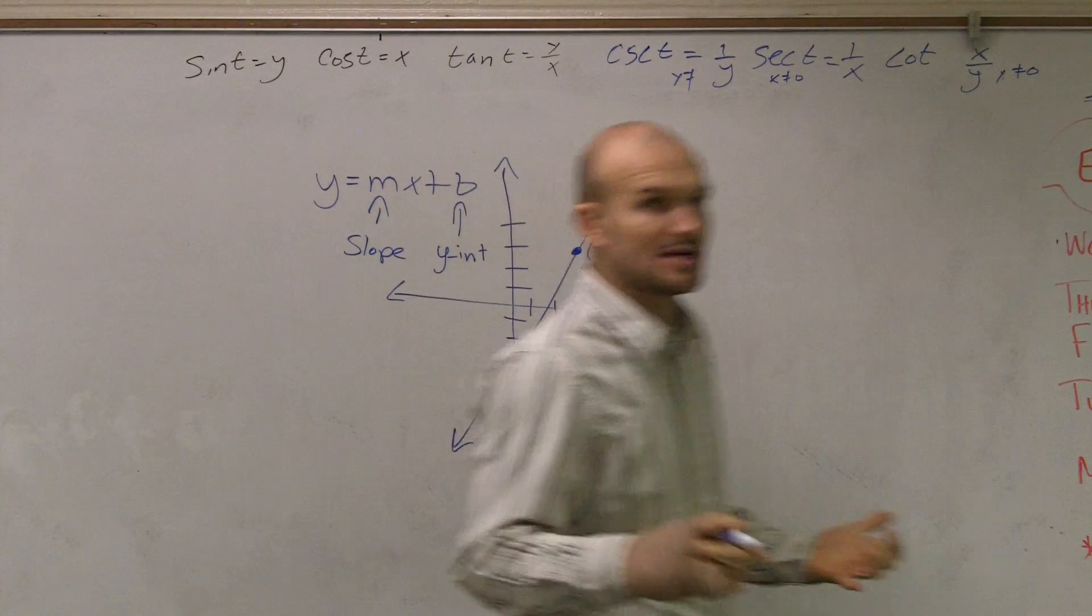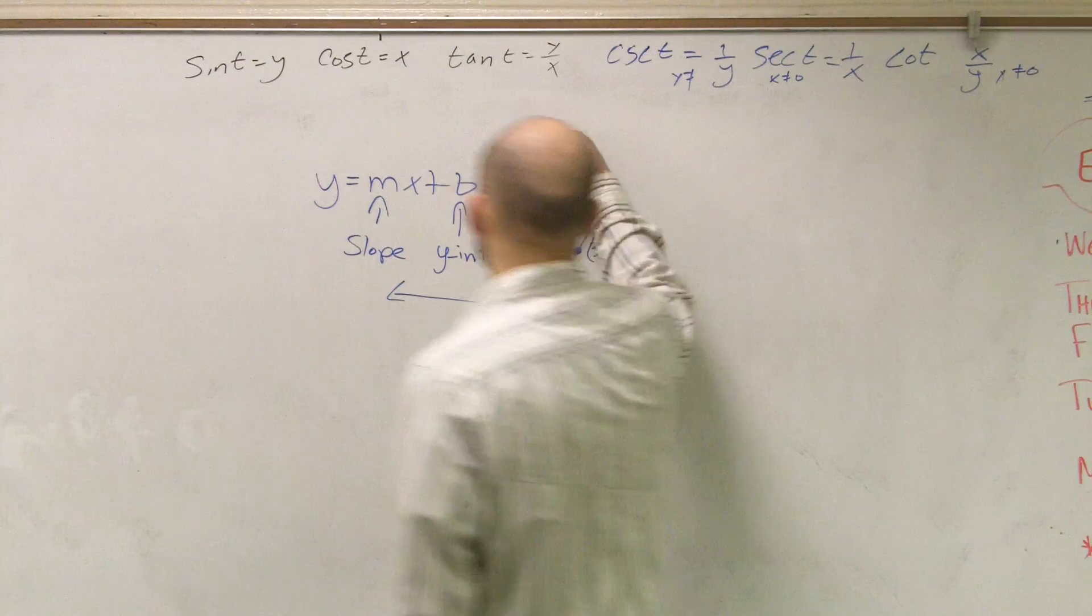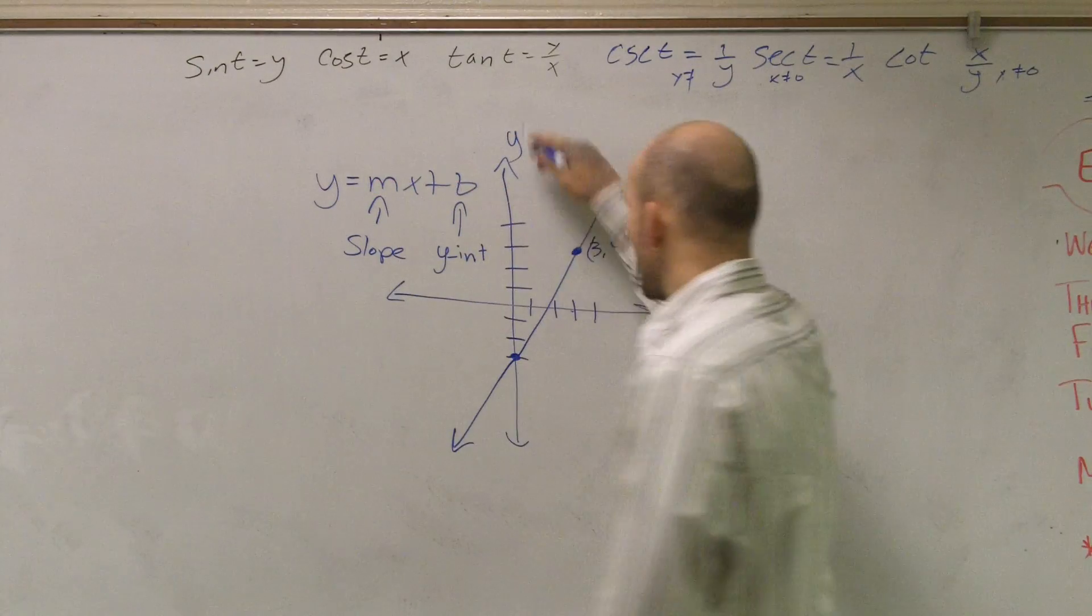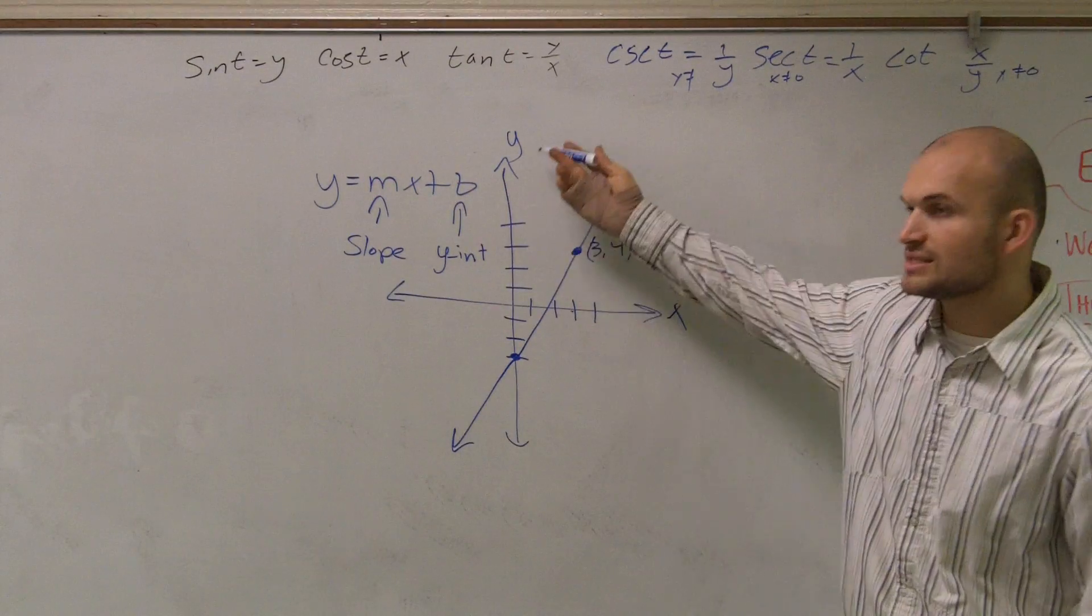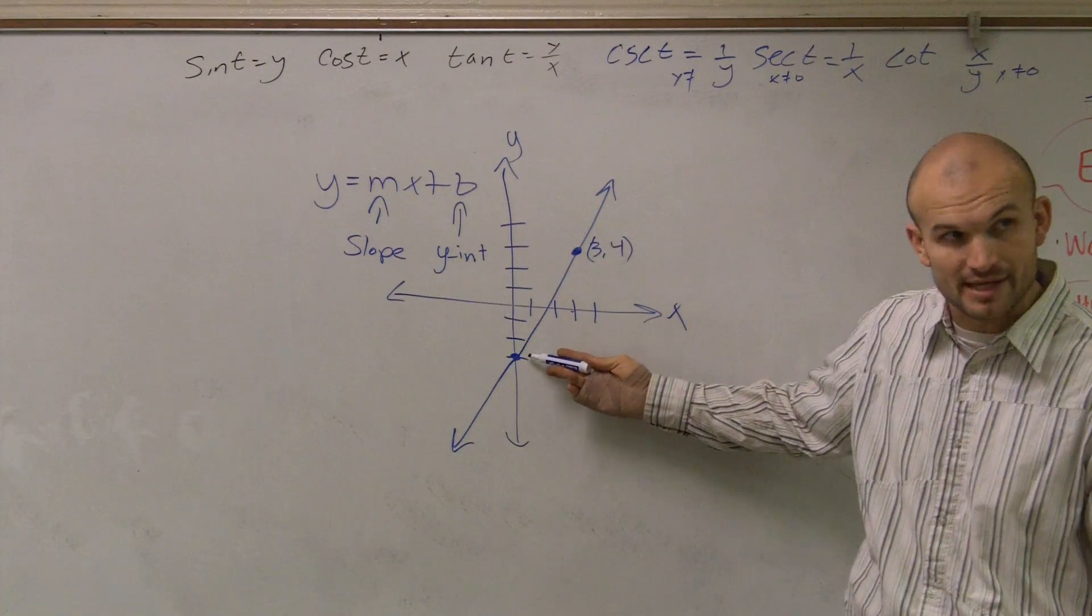Remember, the y-intercept of a line is where a graph crosses the y-axis, right? So I look at here and I say, well, what is my y-axis? Obviously it's there. So I look, where does this line cross my y-axis? It crosses right there.